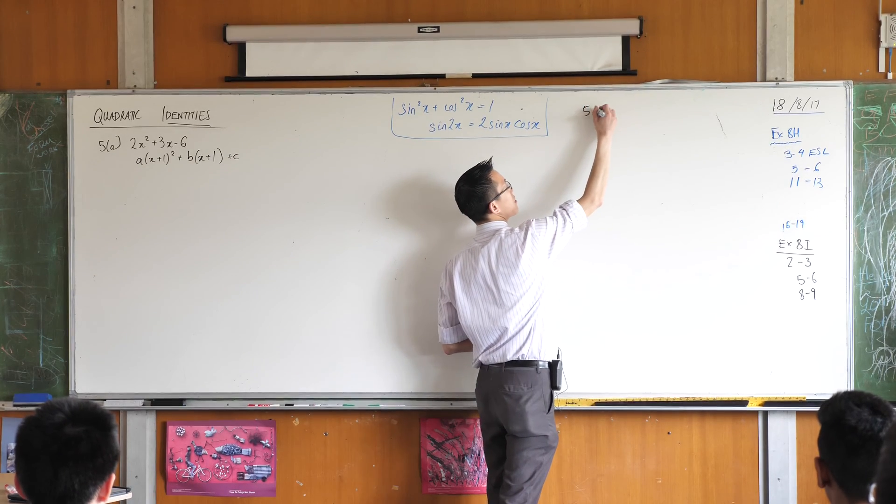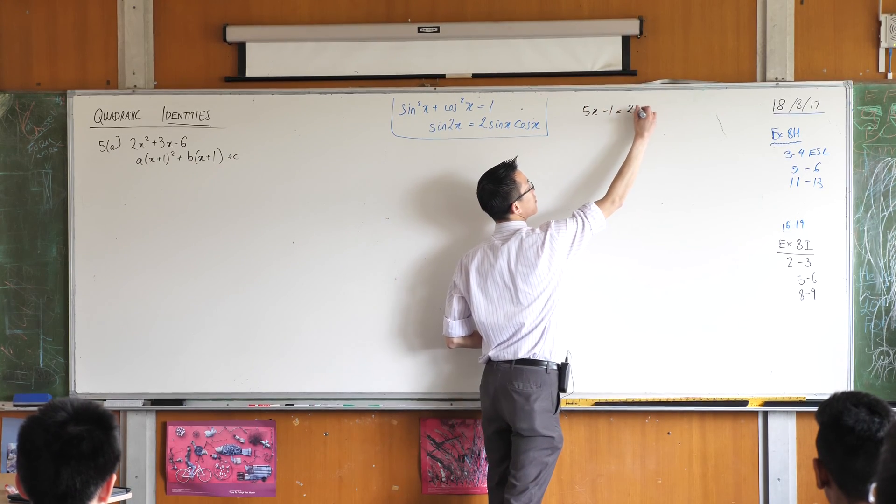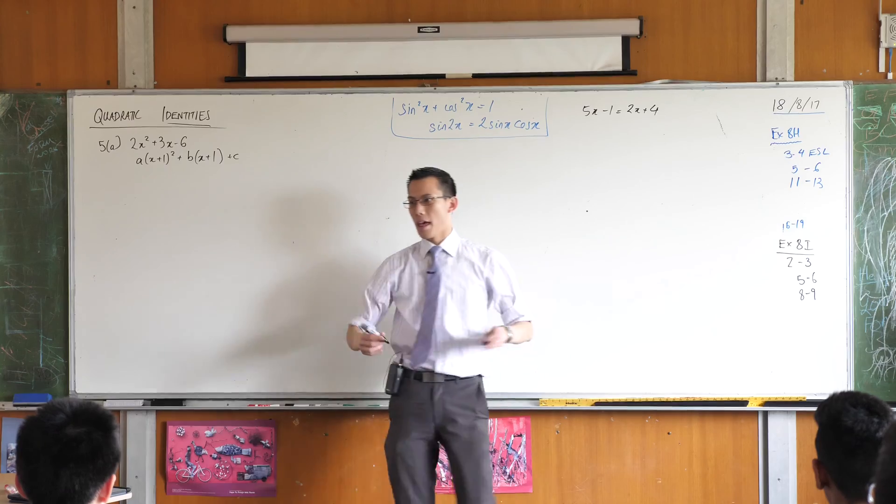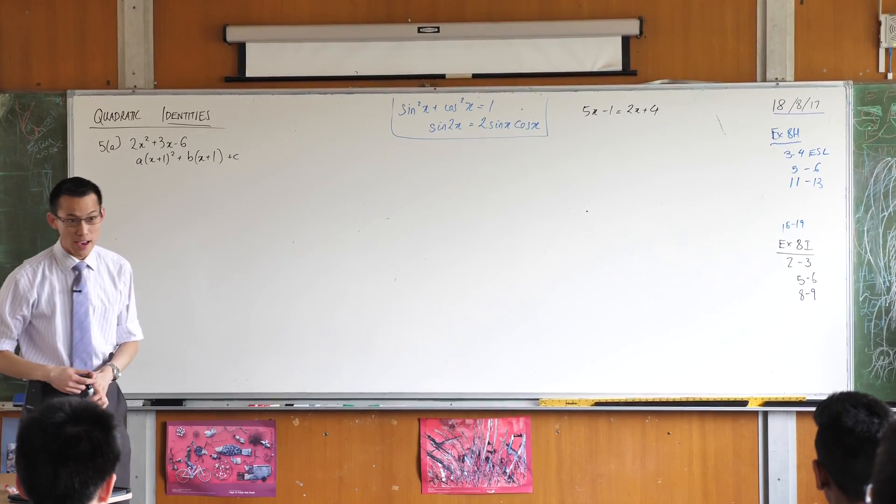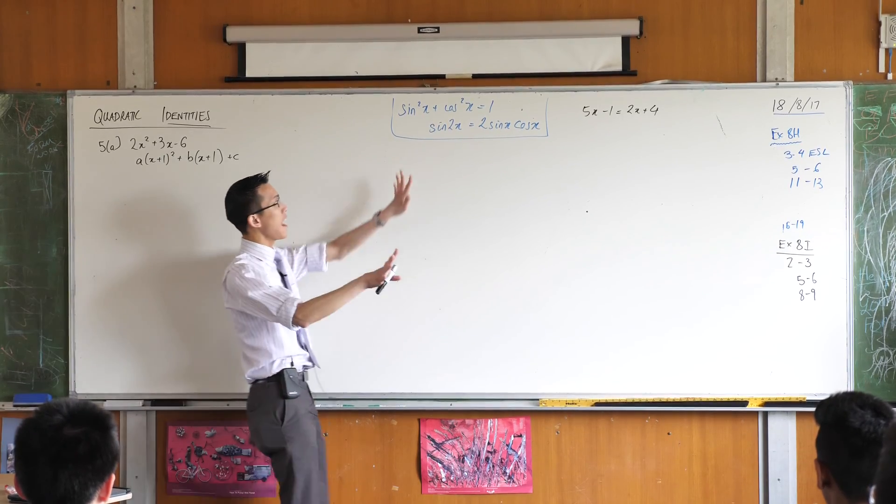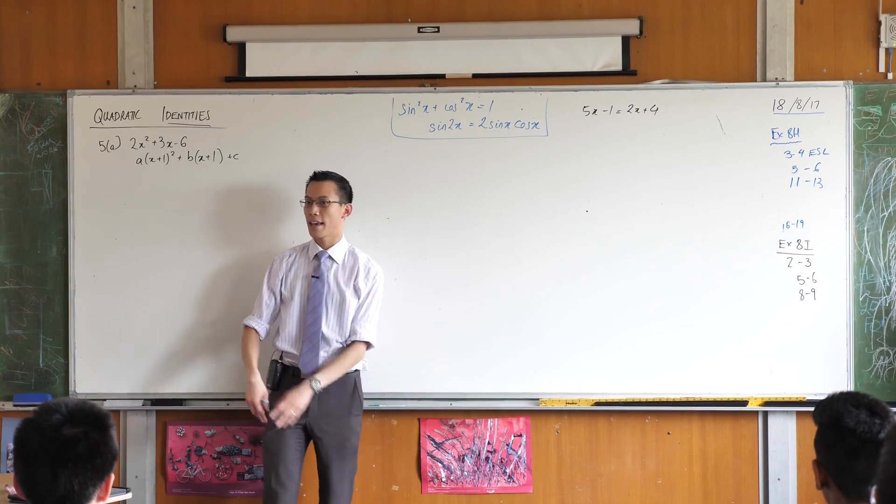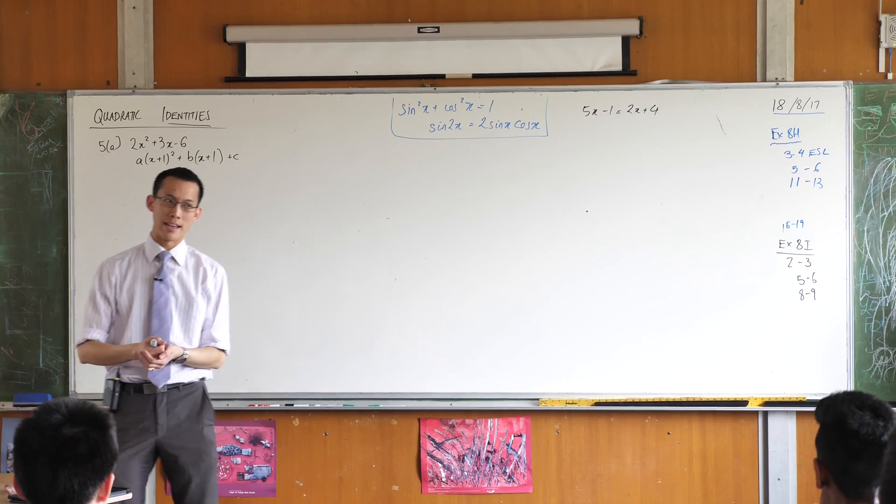As opposed to something like this, that equation is sometimes true. If you put in a specific value of x that will be true, but if you put in any value of x here that you like it works and that's what we call an identity.